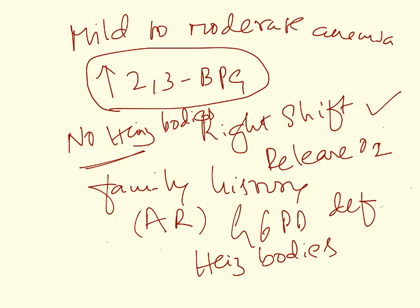To summarize the signs in pyruvate kinase deficiency: mild to moderate hemolytic anemia, increase in 2,3-BPG leading to right shift in the oxygen dissociation curve, no Heinz bodies, positive family history, and autosomal recessive inheritance. I hope you understood pyruvate kinase deficiency. Thanks for watching — I will come up with the next video soon.